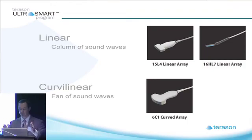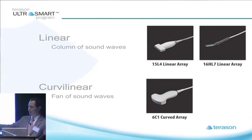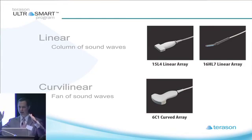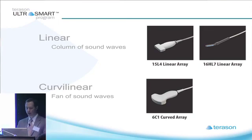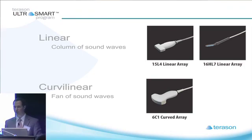Linear arrays send out a column of sound waves, more or less, although there are some features I won't mention much, which include trapezoidal imaging, where a linear array can send out signals beyond the column. The curvilinear sends out a fan of sound waves — the same kind of transducer you'd use for OB purposes or abdominal scanning, which most of us would recognize.